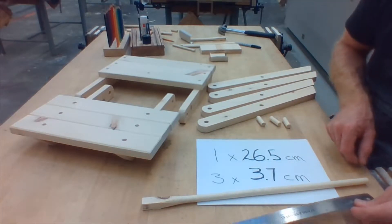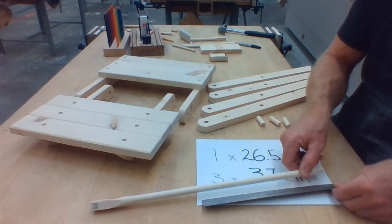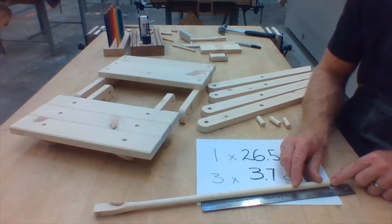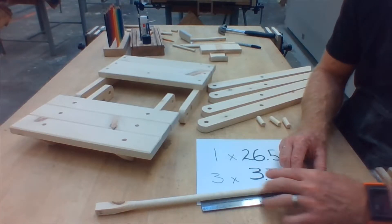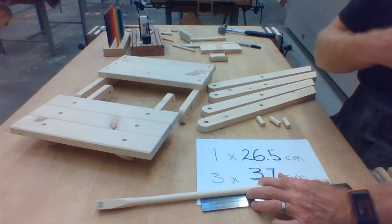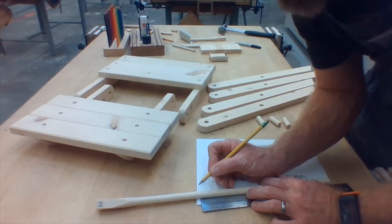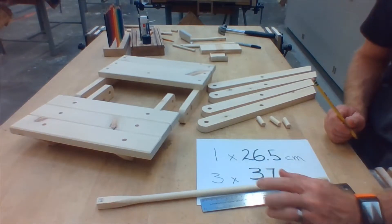Start with the long piece first. Lay your long dowel so that the end of the dowel is at 26.5 and go back to the zero on the ruler and make a mark. Again, it's important to have it as precise as possible.